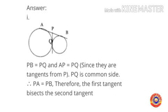Here, PB equal to PQ and AP equal to PQ since they are tangents from P. PQ is common side, therefore PA equal to PB, therefore the first tangent bisects the second tangent.